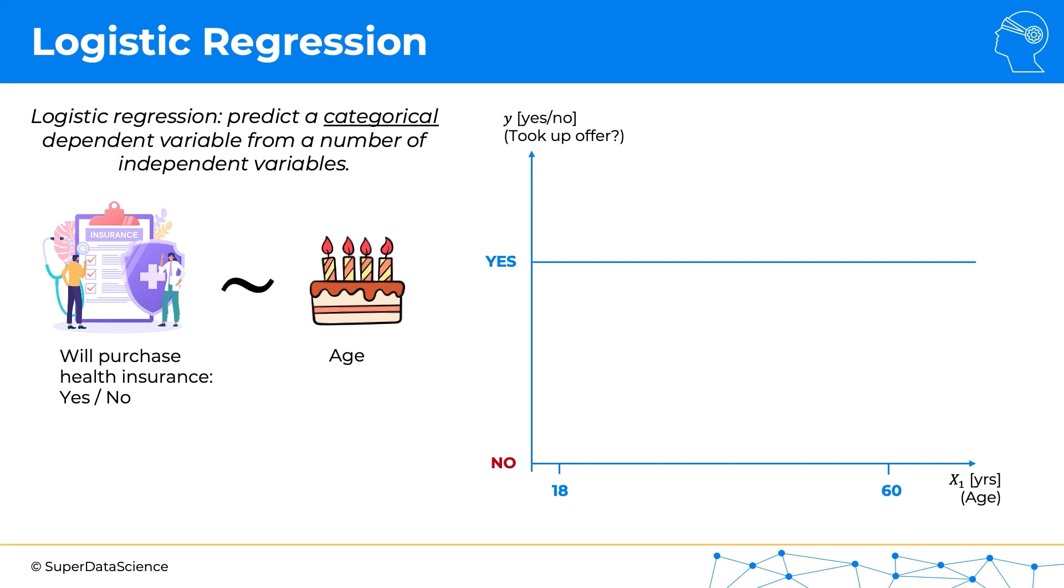These people over here didn't purchase the health insurance, and these people over here did purchase the health insurance. That's our dataset. As you can see, this plot looks very different to what we were working with in the linear regression tutorials.